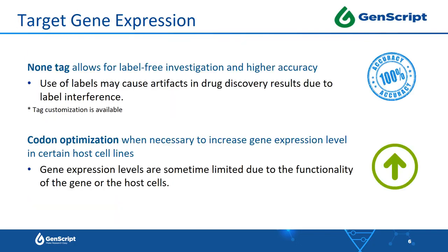Regarding the expression of target genes, several efforts ensure the best performance. First, there is no tag for the expressed target gene in our stable cell lines. Recent research has found that using labels may cause artifacts in drug discovery results due to label interference. Therefore, our non-tag technology allows for label-free investigation and higher accuracy. In addition, codon optimization is performed when necessary to increase gene expression levels in certain host cell lines. It can be challenging for some genes to achieve high expression in certain hosts, and codon optimization solves this problem without altering the amino acid sequence of the target gene.